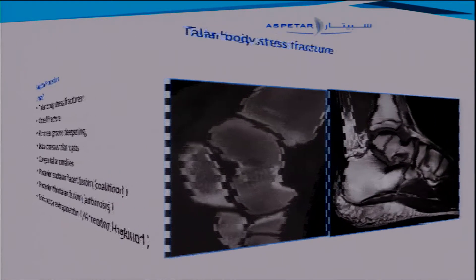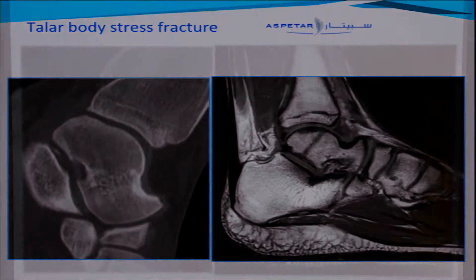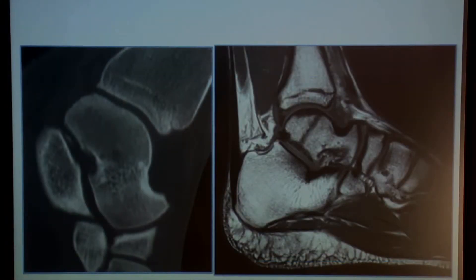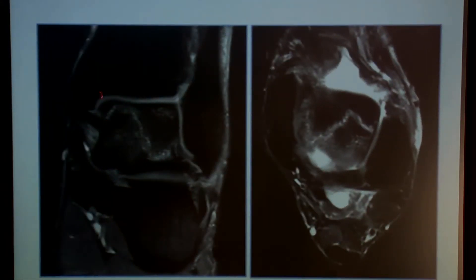I would like to show you with a few cases. We had a player with chronic ankle pain with x-ray and CT that were completely normal. But when you see it on MRI, you see a stress fracture arising in the talar body. These views of the same patient show a stress fracture of the talar body.